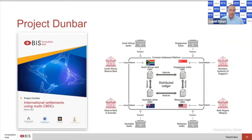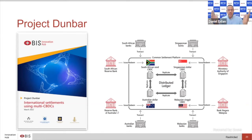Last but not least, Project Dunbar is a joint project led by the MAS with Bank Negara Malaysia, the Reserve Bank of Australia, and the SARB — four jurisdictions with four different currency types. Here the central banks are on the perimeter, issuing and redeeming into the network, with the focus on direct peer-to-peer connectivity between commercial banks and AML-KYC policies that enable direct flows of funds between these banks.